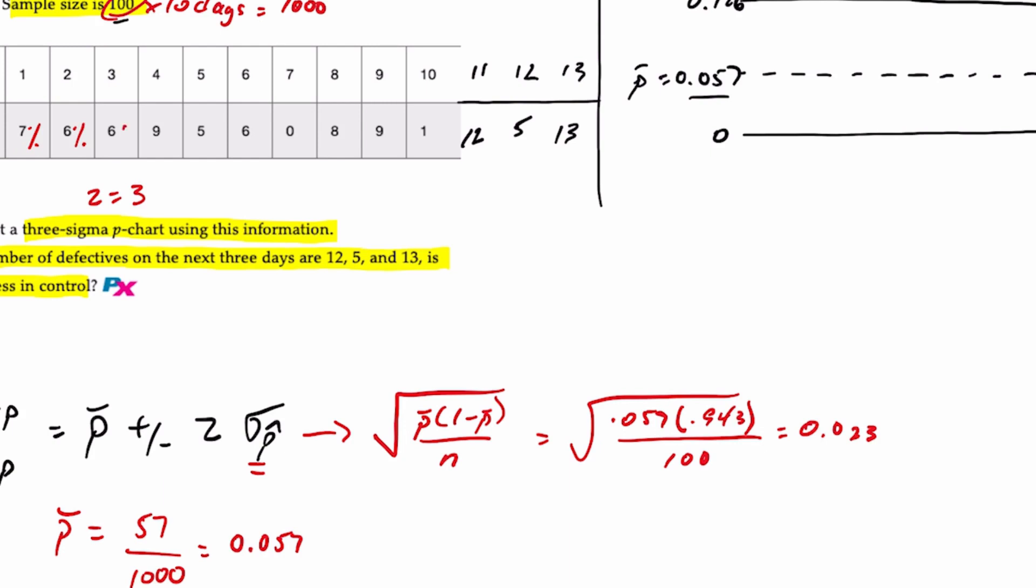So we can express all of these as a percentage. So if we plot day one, we have about 7%. Day two, 6%. Day three, 6%. Day four, 9%. Day five is 5%. Closer to the center line.